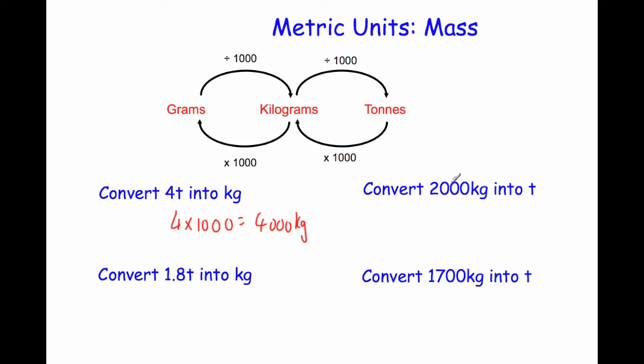Convert 2,000 kilograms into tonnes. Since 1,000 kilograms is 1 tonne, 2,000 kilograms divided by 1,000 equals 2 tonnes.